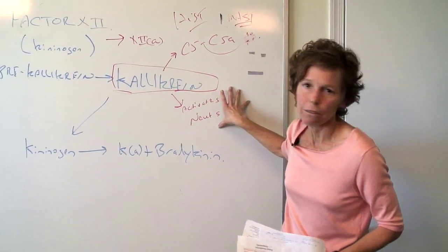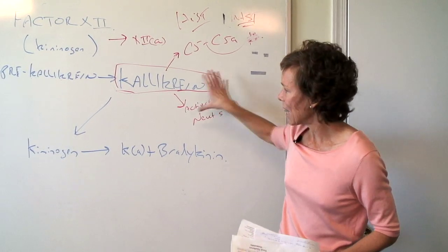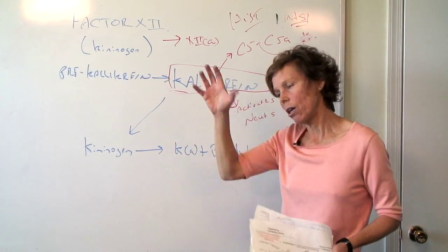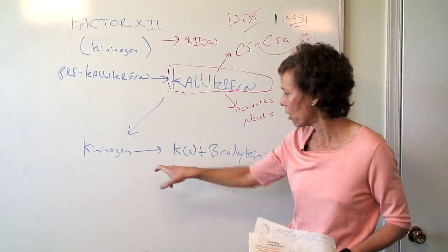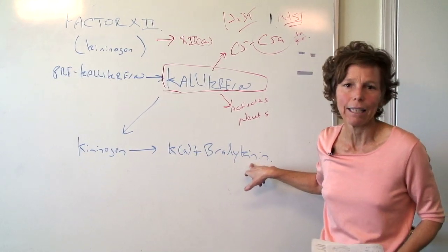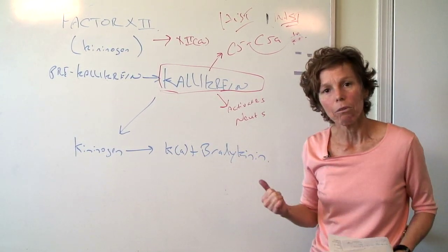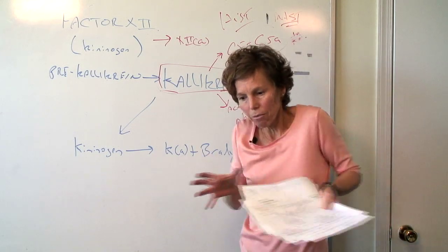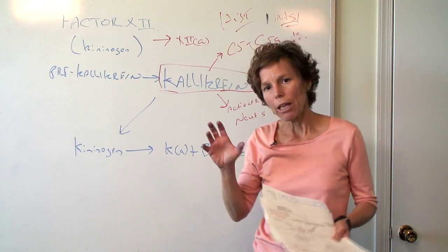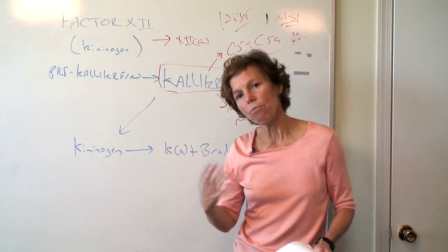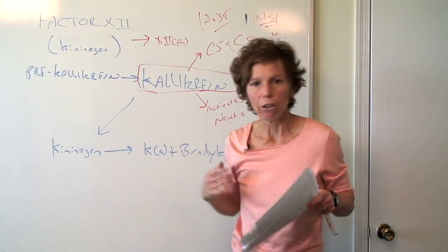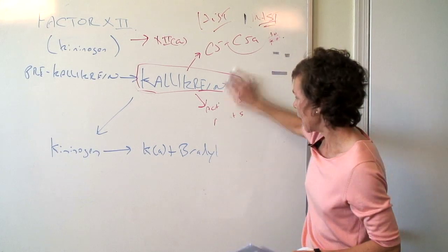The other thing kallikrein does is it activates neutrophils. It also splits kininogen — it's a self-perpetuating system — into kininogen active form as well as bradykinin. Now we know bradykinin does a couple of things: it's vasoactive in terms of vessel permeability, and it's also going to be a pain mediator. So you can see that even just vessel damage is going to start a cascade of immune cells congregating into the tissues and into the fight.